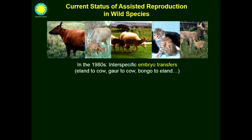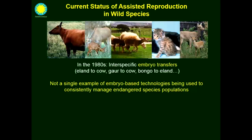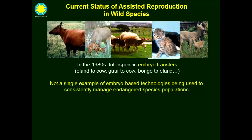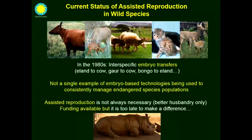In terms of embryo transfer, there were some encouraging results reported in the mid-1980s with interspecific embryo transfer of wild bovids into domestic cows, or even between different wild bovids. But honestly, at this point there is not a single species currently managed with the help of embryo technology in wild animals.